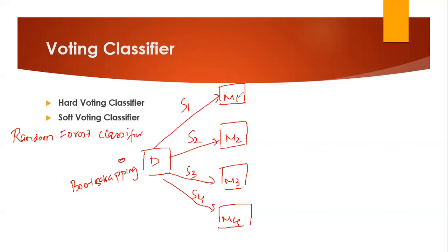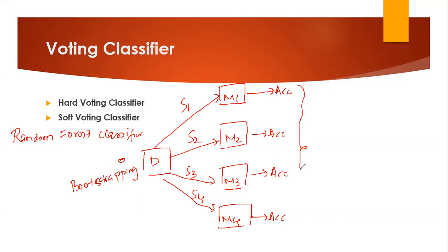Each model gets trained on this particular sample of data and it will give us some accuracy. Finally, we calculate the average accuracy by finding the mean of all these accuracies. When we get the mean of all these accuracies, that will be the accuracy of my random forest classifier.